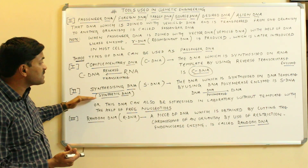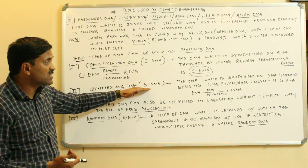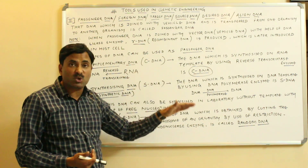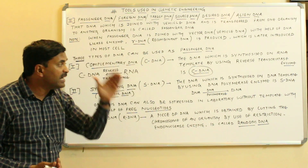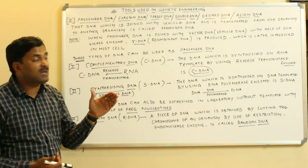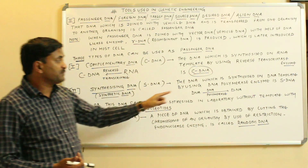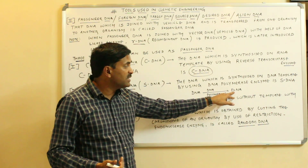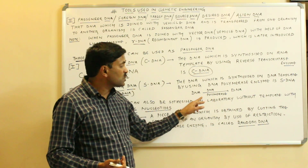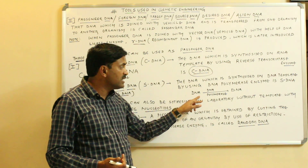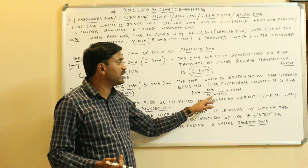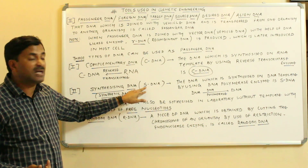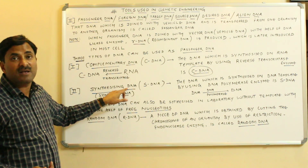The next type is the synthetic DNA, also called sDNA. The DNA which is synthesized on a DNA template by the use of the DNA polymerase enzyme is called sDNA. Here the template is DNA, and on this DNA template a new DNA is synthesized with the help of DNA polymerase enzyme. This newly synthesized DNA is called sDNA or synthetic DNA, which can be used as the passenger DNA.